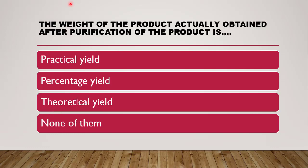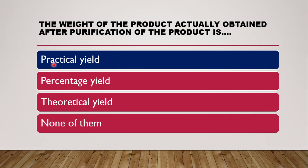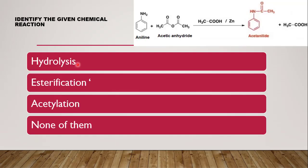Next question: the weight of the product actually obtained after purification of the product is — whether it is practical yield, percentage yield, theoretical yield, or none of them. The correct answer is practical yield, which is also called actual yield, obtained after the purification of the product.